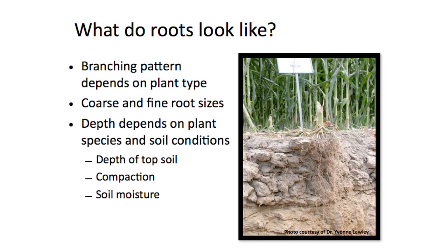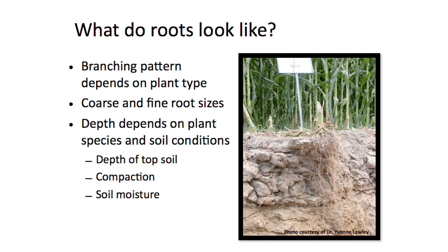Let's talk a bit more about what plant roots look like. Roots can be both very large or very small in size. They're branched and form a network, and what this network looks like depends on the type of plant. Roots can grow very deep in the soil. Often the depth of the roots is taller than the height of the above-ground shoots that you see. The depth of plant roots depends on the plant species but also on soil conditions, for example the depth of the topsoil, and the presence of soil compaction or dense layers in the soil that are difficult for plant roots to push through. Soil moisture also plays a big role. Plant roots have a really difficult time growing through very dry soil, and they also have a hard time growing through excessively wet soil, so there's a spot in the middle that's just right for the best plant growth.